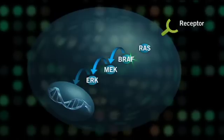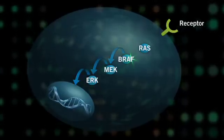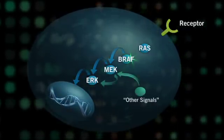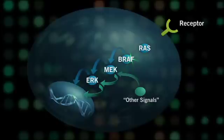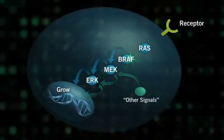For example, cells with mutant BRAF may also use other signals to activate MEK, the protein that comes after BRAF in the Ras-Raf pathway.